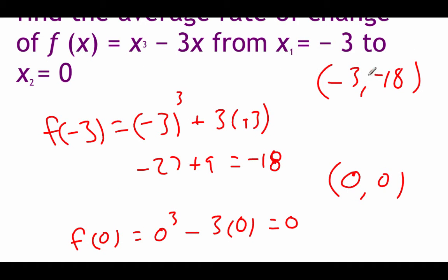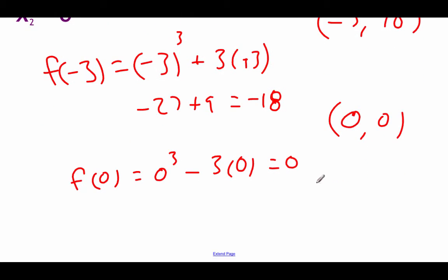So we're finding the slope between these two points, okay, negative three, negative 18, and zero, zero. So we go with y2 minus y1 over x2 minus x1. Double negatives all over the place turn into positives. So we've got 18 over three, which is just six. So the slope of the secant line is six.